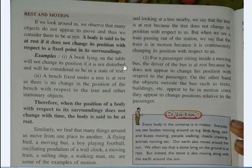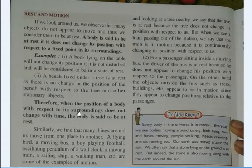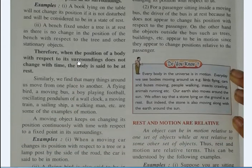Examples are given: a book lying on the table will not change its position if it is not disturbed, and will be considered to be in a state of rest. When we do not apply any force to move it, it remains at rest. Therefore, when the position of an object with respect to its surroundings does not change with time, the body is said to be at rest.